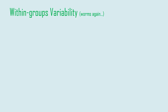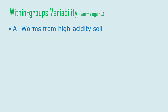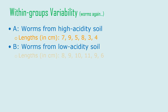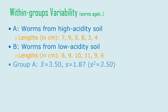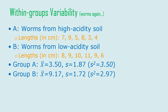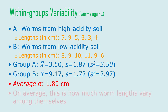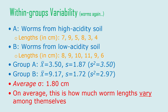Now let's go through an extremely clear group difference. Group A is worms from high acidity soil, group B from low acidity soil. Group A has a mean of 3.5 centimeters and a standard deviation of 1.9; group B has a mean of 9.2 centimeters and a standard deviation of 1.7. The average standard deviation is about 1.8 centimeters — that's how much worm lengths vary among themselves due to factors we can't explain, just due to random sampling from the population. There's not much overlap in these samples.